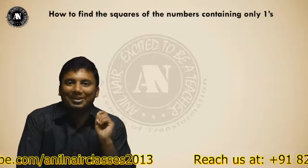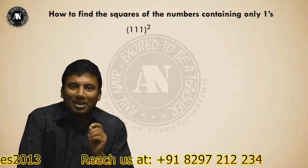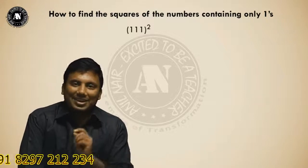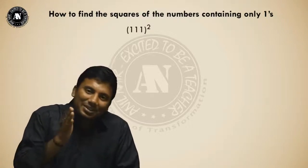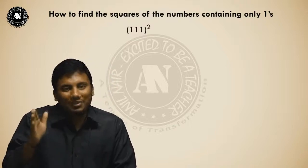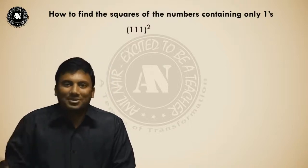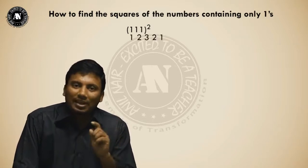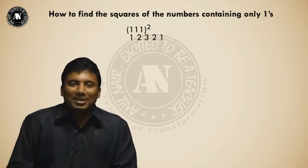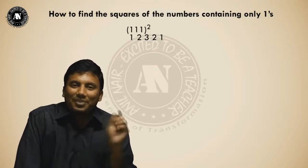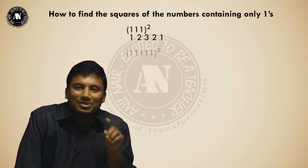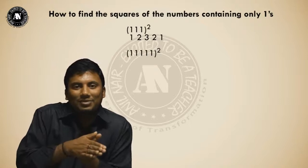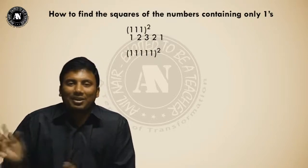Let's find 111 squared. Step one: how many ones are there in 111? Three ones. Write down the natural numbers from one up to the count of ones, then come back to one. So the answer is 1, 2, 3, 2, 1. For five ones, write from one to five and come back: 1, 2, 3, 4, 5, 4, 3, 2, 1.